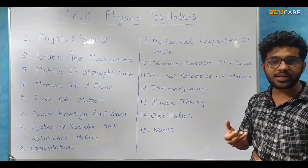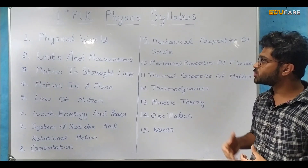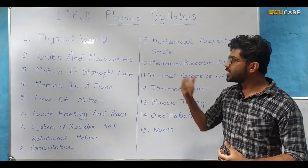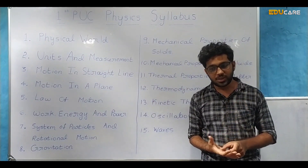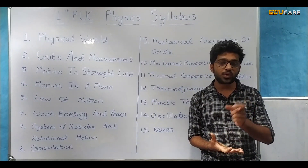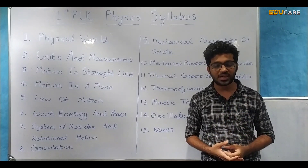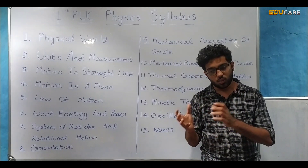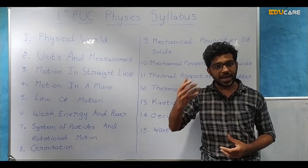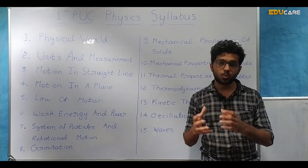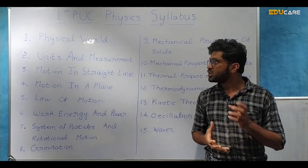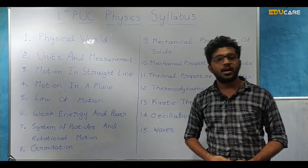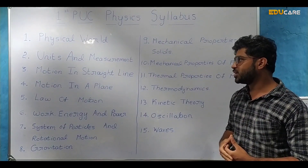Let us see what we are going to study in 1st PUC. The 1st chapter is Physical World. In that chapter we are going to understand what is the meaning of physics, the contribution of various scientists towards physics, different branches of physics, and the scope of physics. These are the concepts we are going to study in the first chapter, Physical World. The next chapter is Units and Measurement.